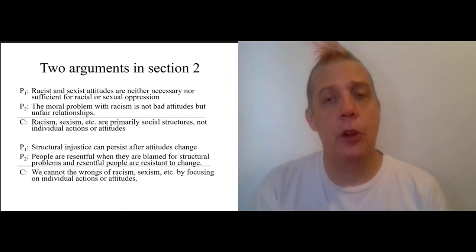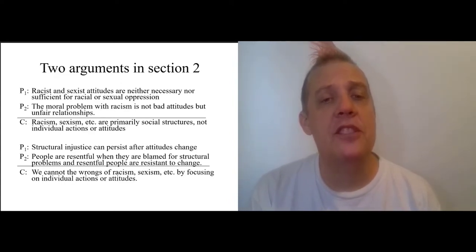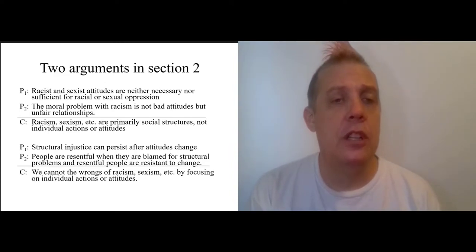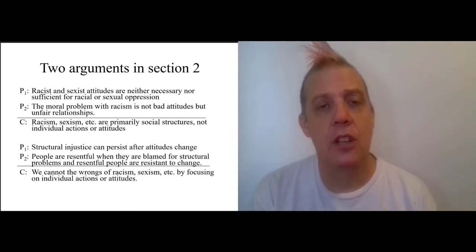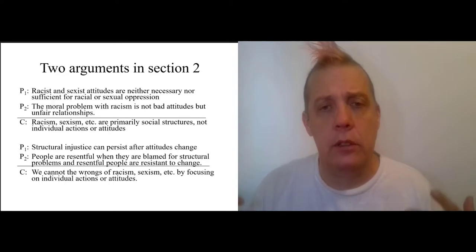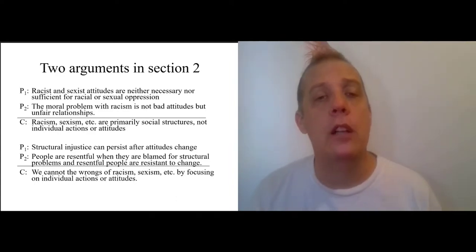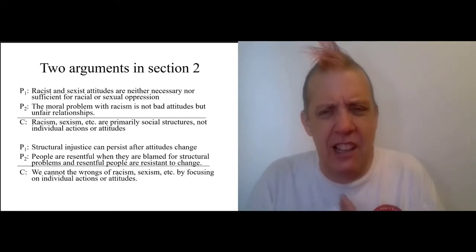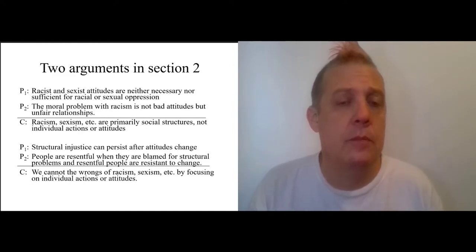She has arguments for both of these theses. For the claim that racism, sexism, etc. are primarily social structures and not individual actions or attitudes, she gives two premises. First, racist and sexist attitudes are neither necessary nor sufficient for racial and sexual oppression. The basic point is that racism and sexism can persist even when no one individually has these negative attitudes, either consciously or unconsciously.